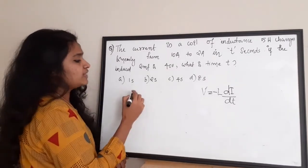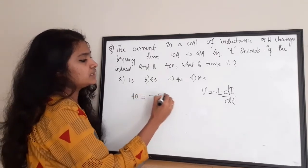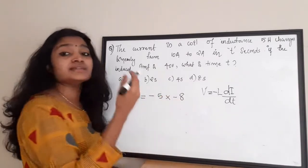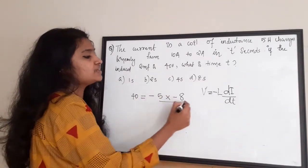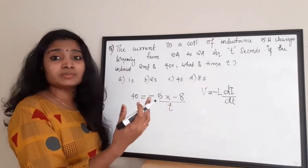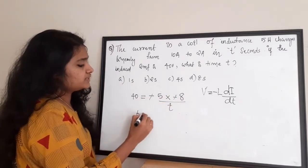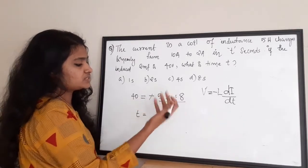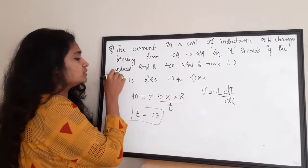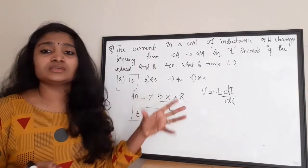Substituting: 40 = -5 × (-8/T). Since the current is decaying, dI is minus 8, and dT is T. Solving this: T = (5 × 8) / 40, which gives T = 1 second. The correct answer for this question is option A, which is 1 second.